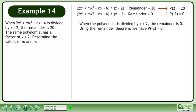When the polynomial is divided by x plus 2, the remainder is 0. Using the remainder theorem, we have P(-2) equals 0.